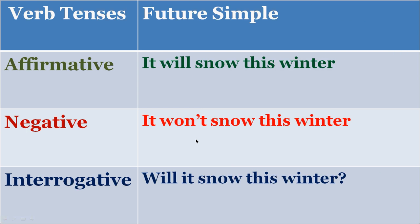Then you have simple future tense. Affirmative: 'It will snow this winter' or 'It will rain this week.' Negative: 'It won't rain this week at all' or 'It won't snow this winter.' Interrogative: 'Will it snow this winter?' or 'Will it rain tomorrow?' 'Will' always indicates simple future.